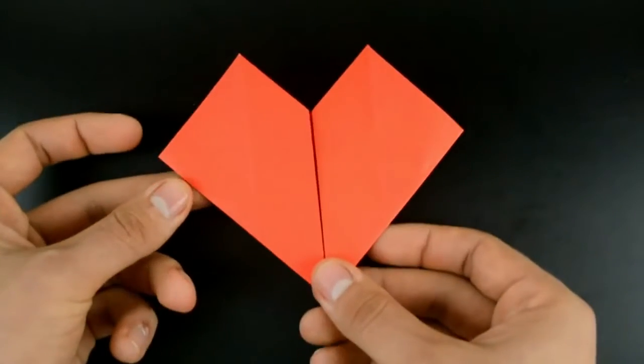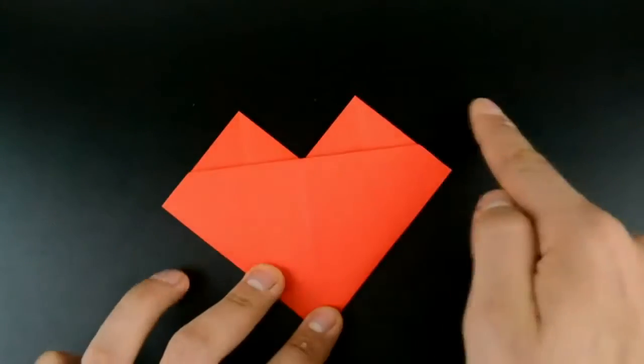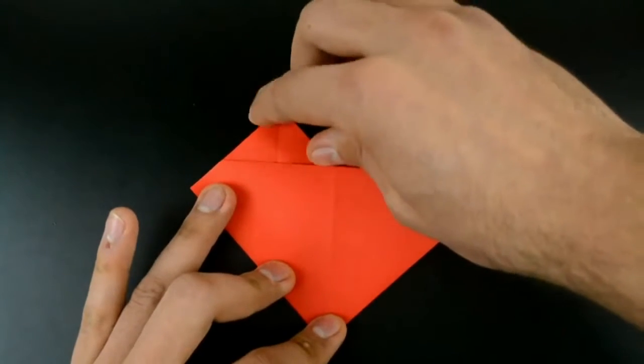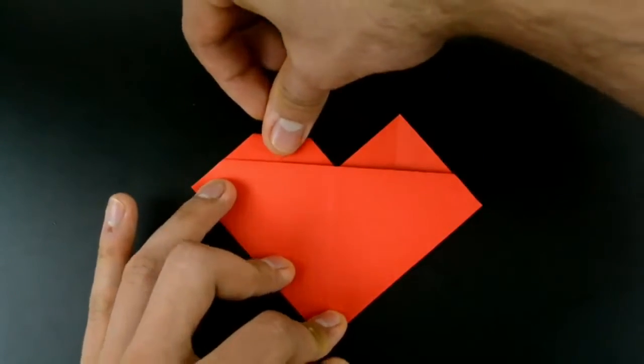Now fold the top corner to the left. Turn the paper over and fold these two top corners down. Fold like this until this line.